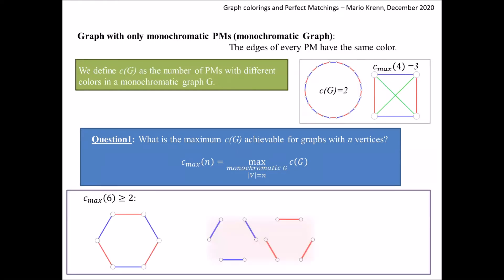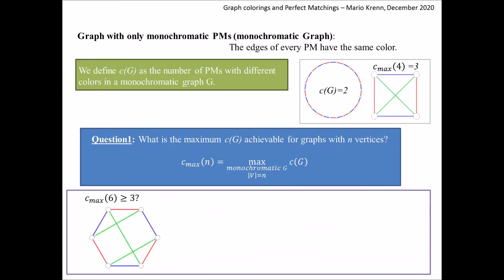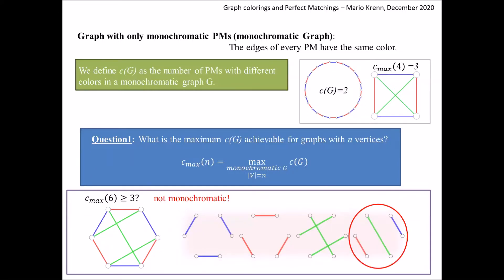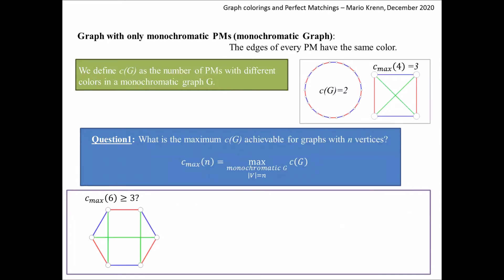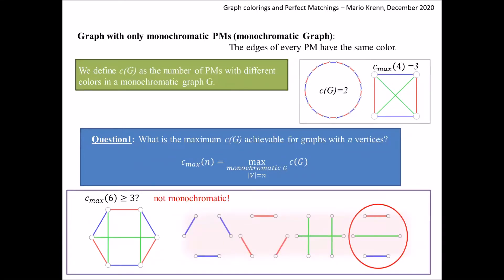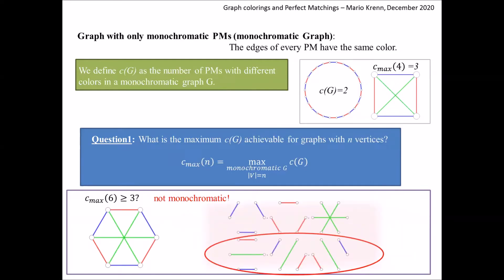Let's go now to graphs with six vertices. We already know that the cycle graph is monochromatic with two colors — this is a lower bound for C-max of six. Let's try to add another perfect matching with a third color. We find three monochromatic perfect matchings as expected. However, this graph also has another perfect matching with three colors, meaning it is not a monochromatic graph. Other choices for the third perfect matching also fail. So it appears to be surprisingly difficult to find a monochromatic graph with six vertices and C equals three.